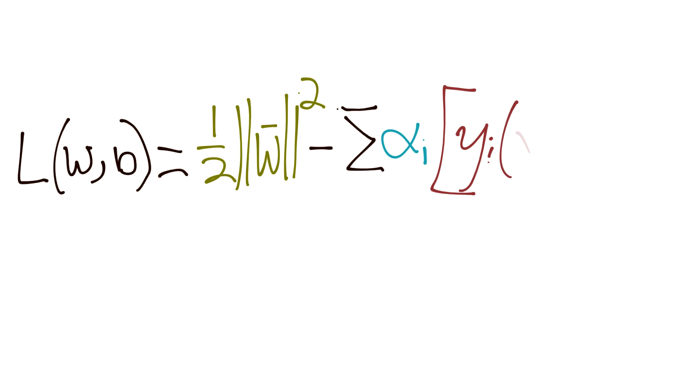So then we're going to have our Lagrangian. And it's going to state that the L w b equals what we already decided was going to be our statement for the magnitude of w. And that was going to be 1 half the magnitude of vector w squared minus the sum over alpha i, where alpha i is our Lagrangian multiplier. And then the constraint we have is the constraint that we define as being our support vectors. So that was y sub i multiplied by x sub i w plus b minus 1. And that is our initial statement here that we need to optimize.